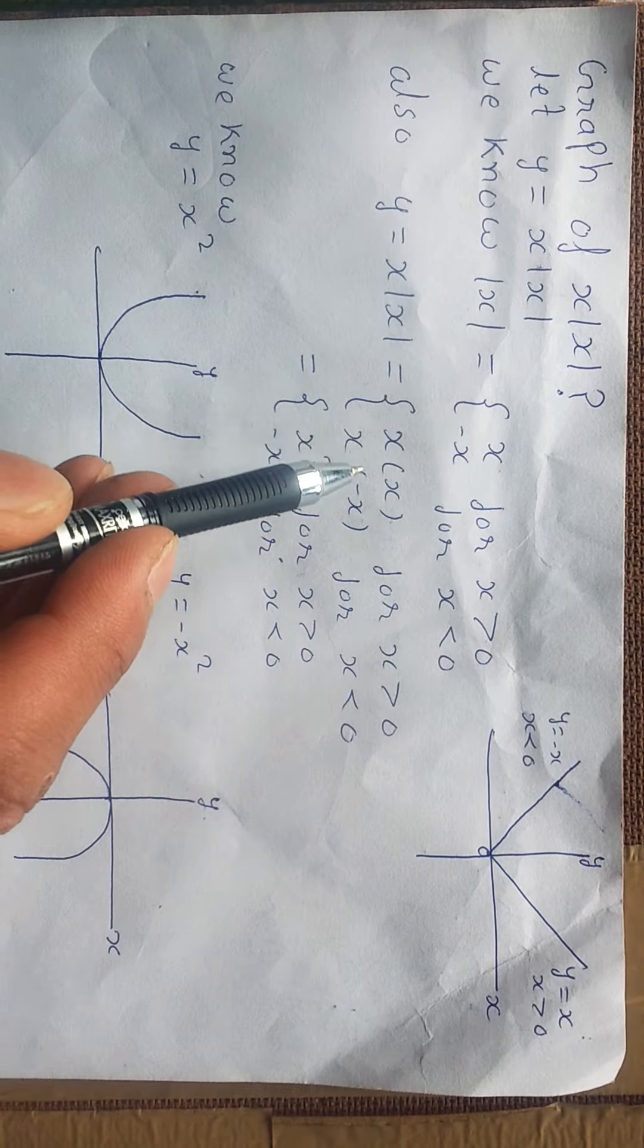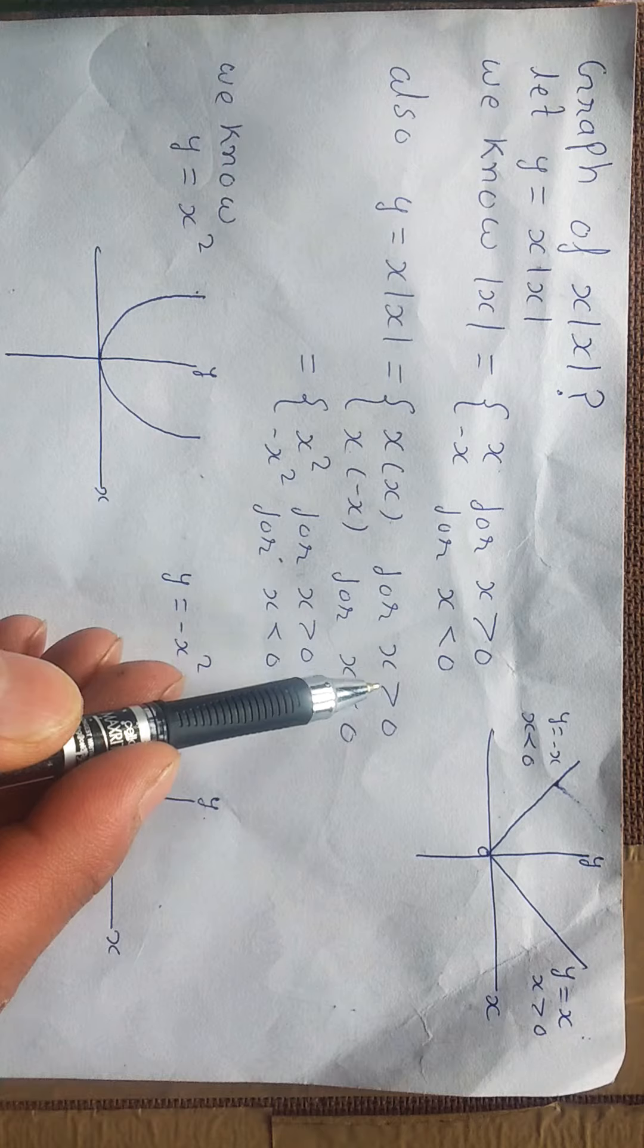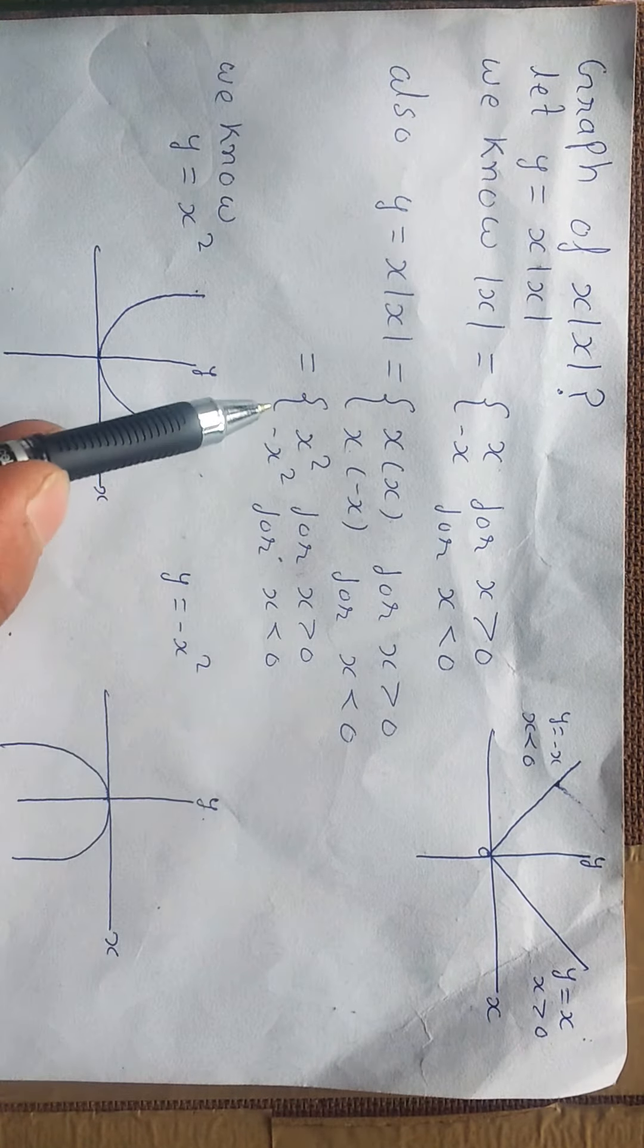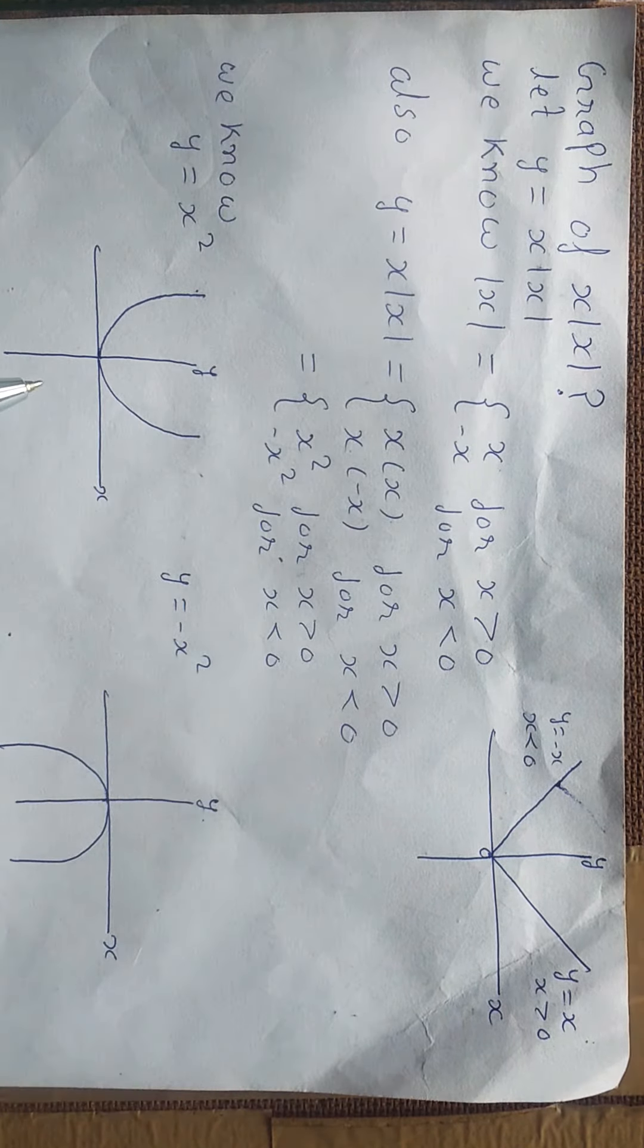So we can write it as x times x for x greater than 0, and x times minus x for x less than 0, which comes out to be x squared and minus x squared.